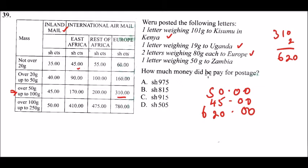One letter weighing 50 grams to Zambia. It falls in the category over 20 grams up to 50 grams. Since Zambia is in the rest of Africa, he paid 100 shillings for that letter.